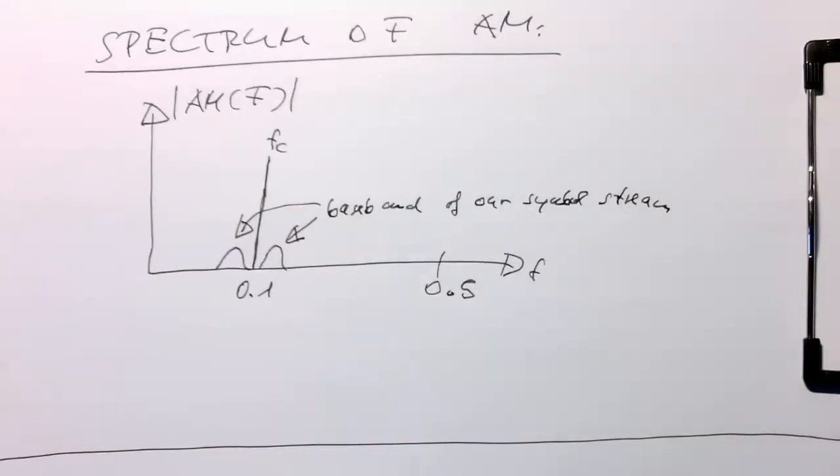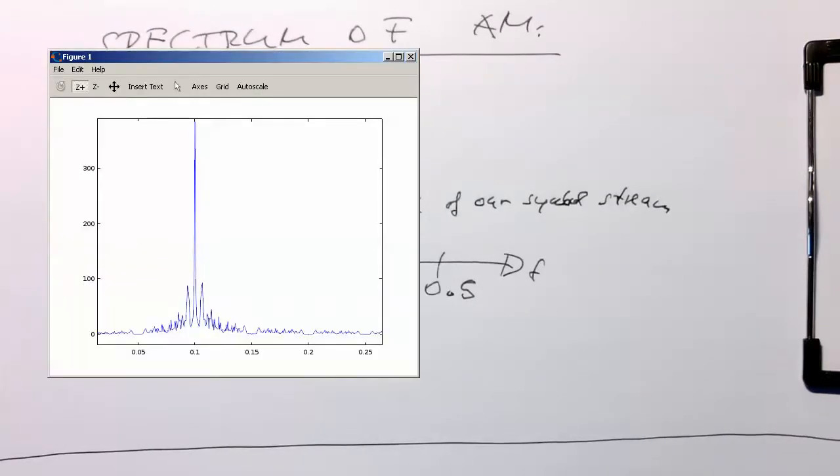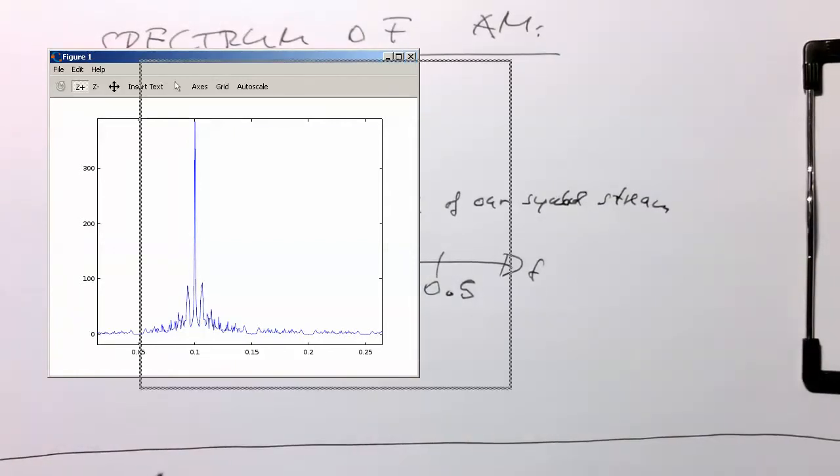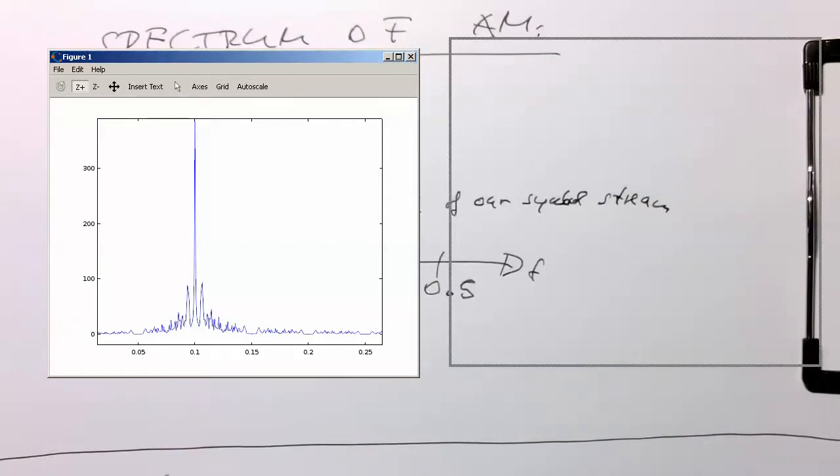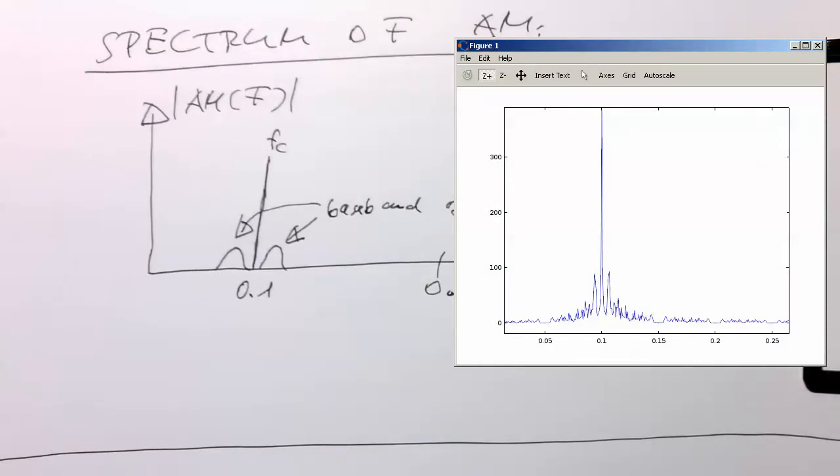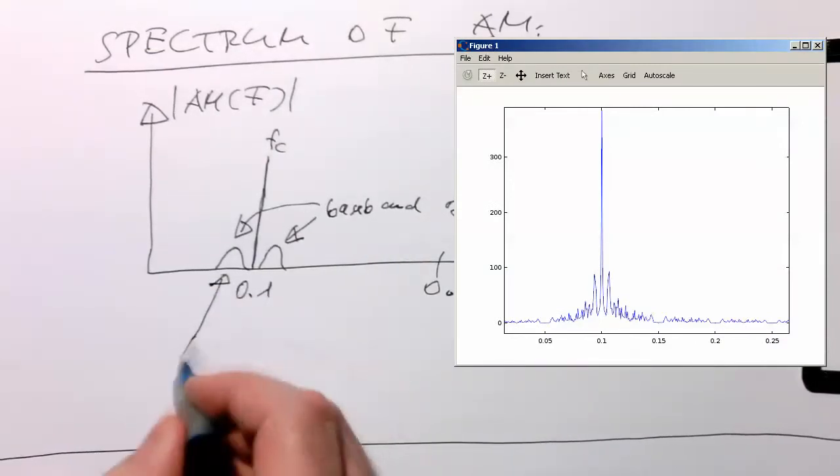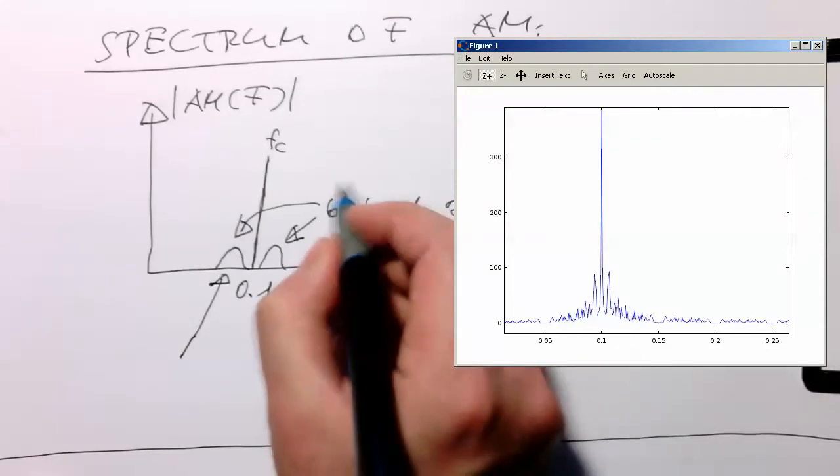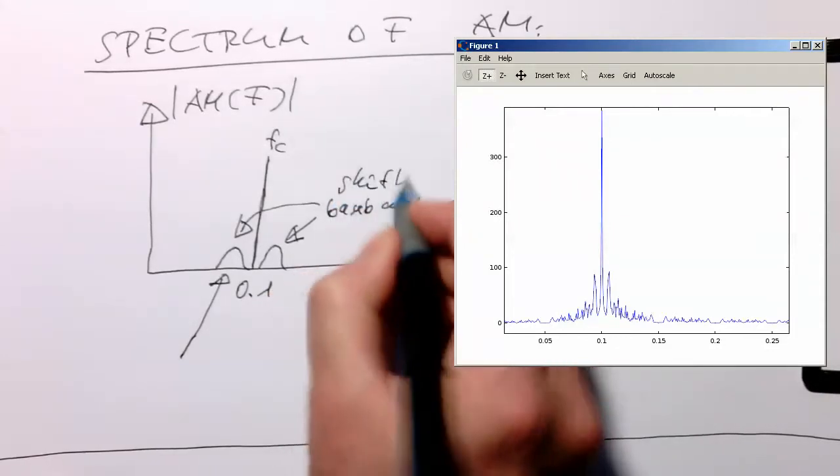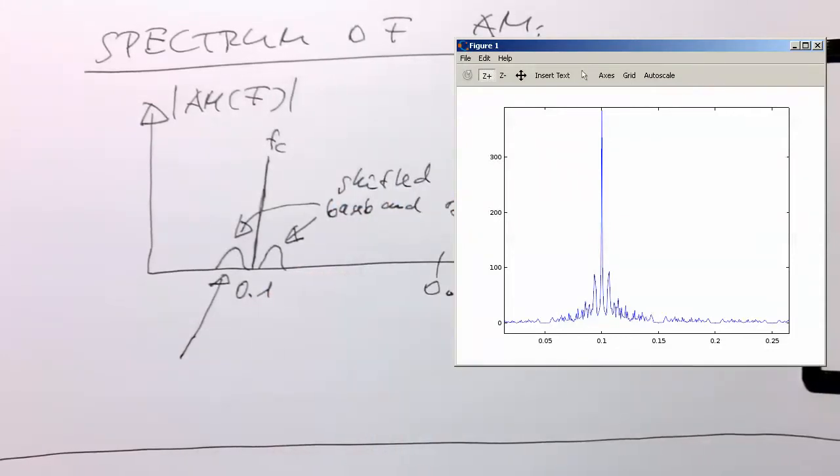Just to click the plot back in here. Yeah. So this is the actual information. These two sidebands here, how they're called. Let's just move this a bit to the side here. So I should say this is shifted, shifted baseband of our symbol stream. And these ones are called sidebands.